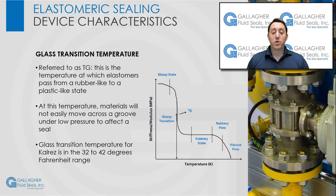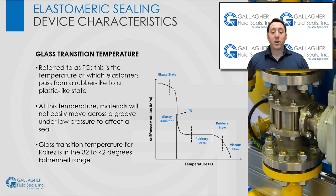Glass transition temperature, referred to as Tg, is the temperature at which elastomers pass from a rubber-like to a plastic-like state. At the glass transition temperature, materials will not easily move across a groove under low pressure to affect a seal. However, Tg does not imply tendency of the material to break due to impact, motion, or pressure. Other methods of low temperature rating are Clash-Berg stiffness, TR-10 or temperature retraction, and the Gehman torsional stiffness. Most elastomers do not fail because they have a high glass transition temperature — they typically fail through an inadequate groove design, when thermal shrinkage and higher compression set requirements of elastomers are not taken into account. Glass transition temperature for CalRez is in the 32 to 42 degree Fahrenheit range.